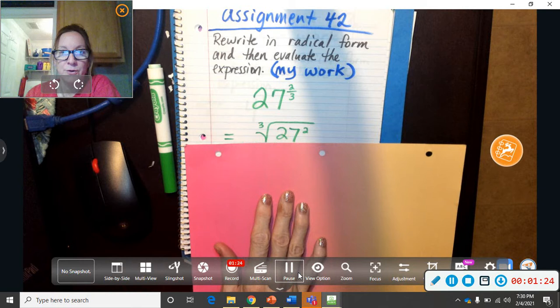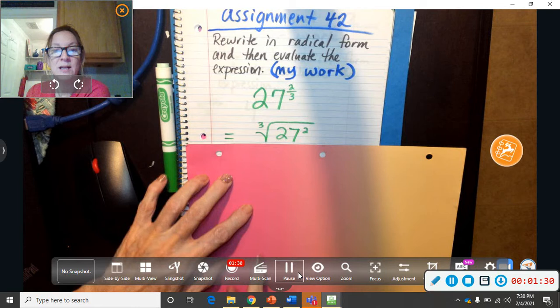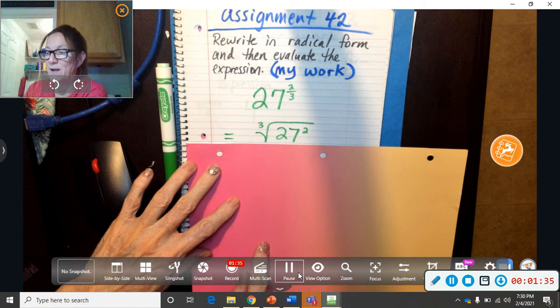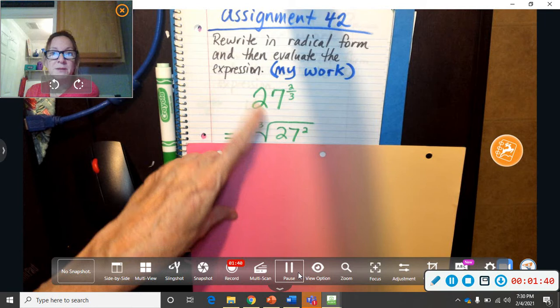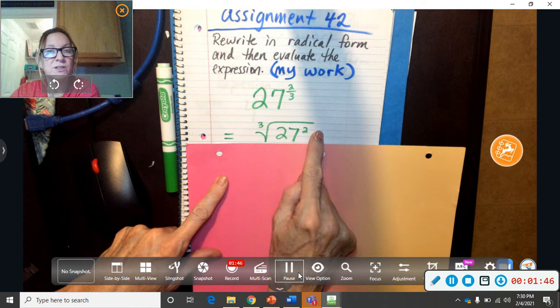You know that the 27 is going to be the one that goes under the radical and the 2, oh, the 2 is on top so it's important. It gets to go inside the house. The 3 is not important. He's on the bottom so he goes outside of the house. That's just the way I remember it. So now, that's the way you rewrite it. But then it says try to evaluate it.